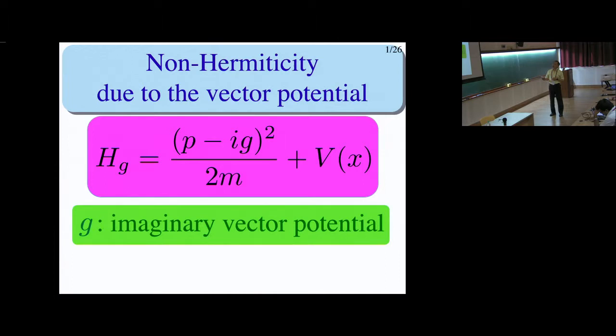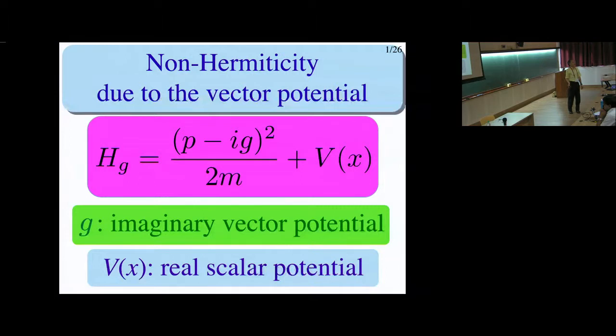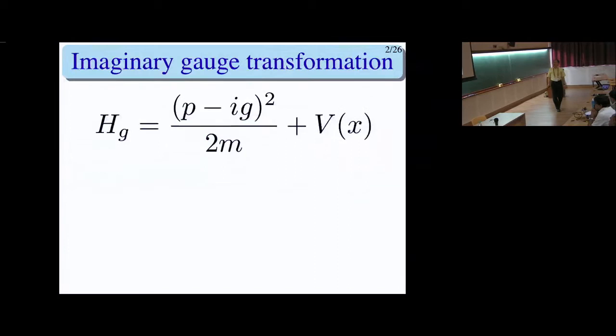This would be a vector potential EA if you have an electromagnetic field, but I put iG. So G is real, but iG is complex — it's a sort of imaginary vector potential. During my talk, all scalar potential is always real. So this is a different type of non-Hermiticity, and I hope I can attract your attention to it.